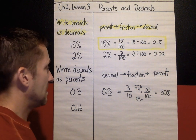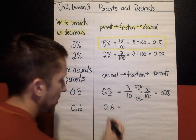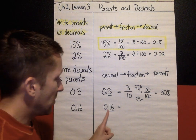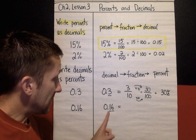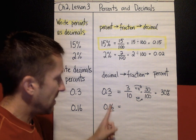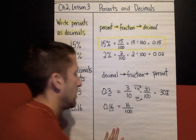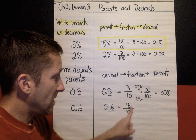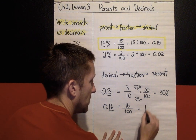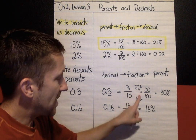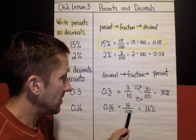Let's do one more: 0.16. To change this into a fraction, I say it using place value — the last digit is in the hundredths place, so I say '0 and 16 hundredths.' 16 hundredths — that's my fraction. I don't have to do anything to this one because it is already out of 100. So right away I can change that into 16 percent. This one already came out of 100, so I could go right from 16 hundredths to 16 percent.